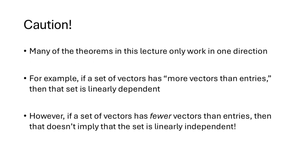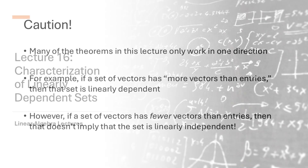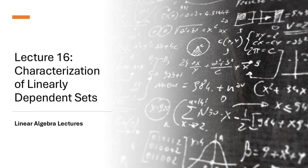We have to be careful: many of the theorems in this lecture only work in one direction. For example, if a set has more vectors than entries, it's linearly dependent — but if a set has fewer vectors than entries, that doesn't necessarily mean the set is linearly independent. We must only use these theorems in the direction they actually work. Check the description below for another video where I work through examples applying these criteria to different sets of vectors.